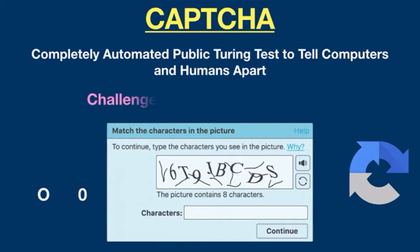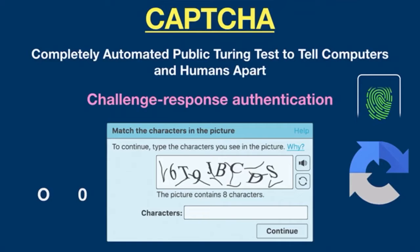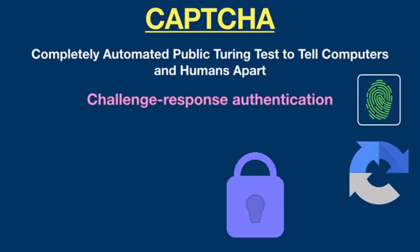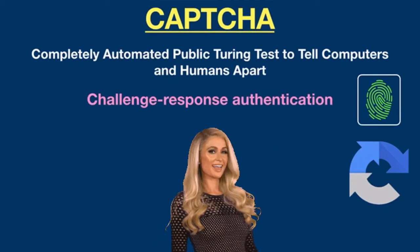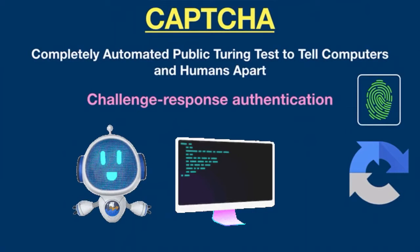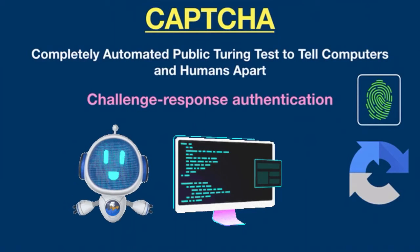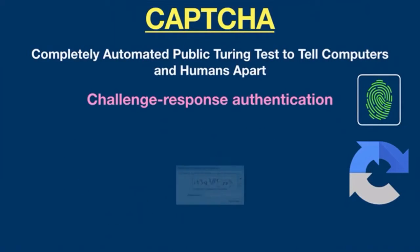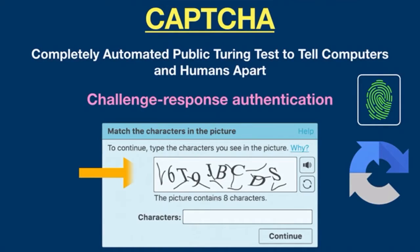CAPTCHA is a type of security measure known as challenge-response authentication. It protects from spamming and password decryption by asking you to complete a simple test that proves you are a real human, not a robot or bot trying to break into a password-protected account. The CAPTCHA test is made up of two simple parts: randomly generated letters or numbers that appear as a distorted image, and a text box. This test is difficult for a robot to perform but relatively easy for humans.